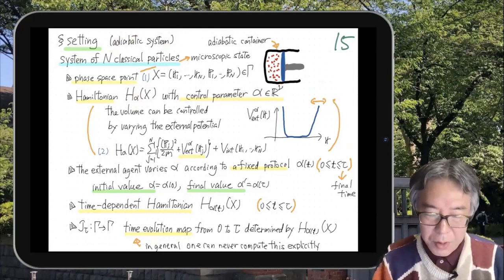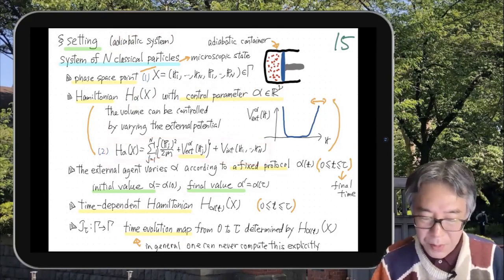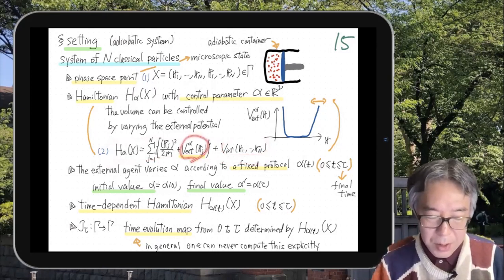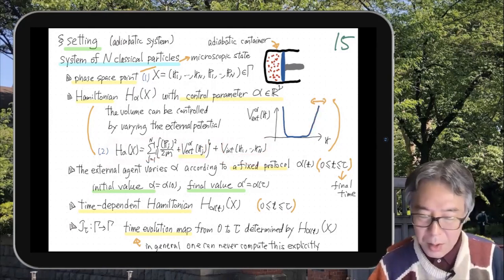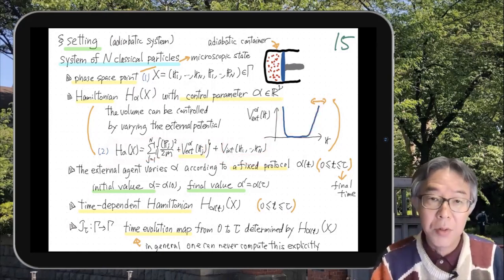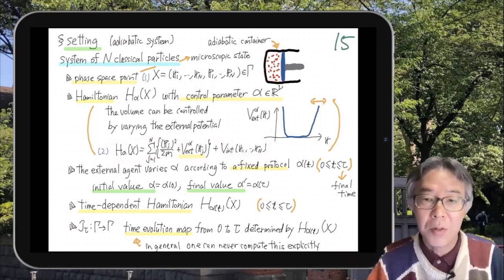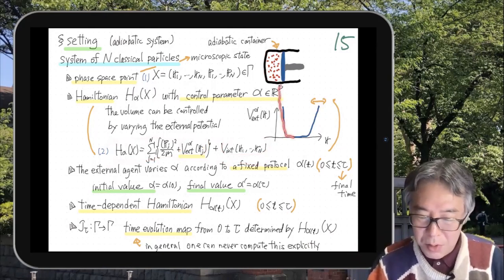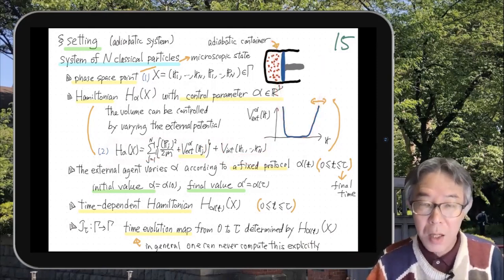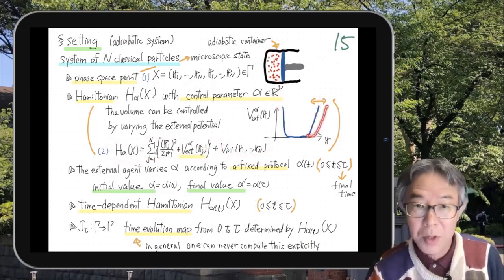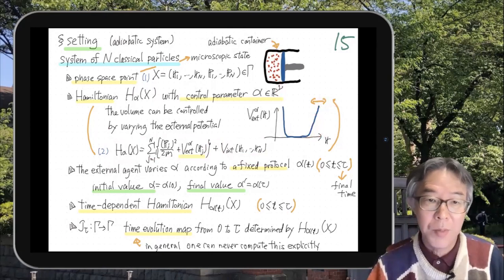You can realize control of volume in the following way. Consider a general Hamiltonian with no magnetic field, with particle interactions and an external potential common to all particles. Suppose this external potential has a certain shape — by changing this potential you can effectively control the volume. The container can be realized as a boundary condition, but you can also just consider this kind of potential. If the potential is very high, particles can essentially only live in the enclosed region, and changing the potential is basically the same as enlarging the volume.